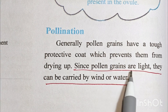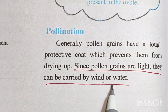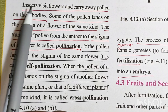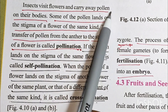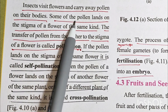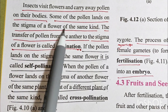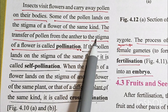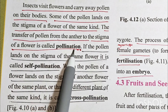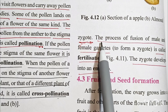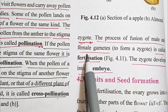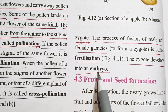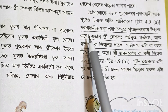Since pollen grains are light, they can be carried by wind or water. Insects visit flowers and carry away pollen on their bodies. Some of the pollen lands on the stigma of a flower of the same kind — this transfer of pollen is called pollination. The process of fusion of male and female gametes is called fertilization. The zygote develops into an embryo.